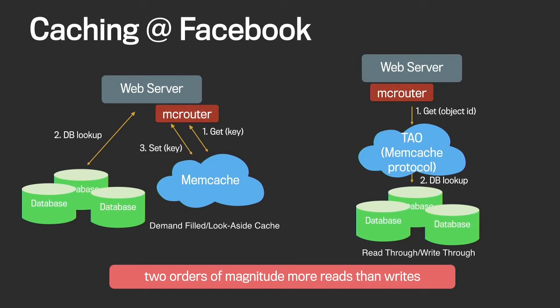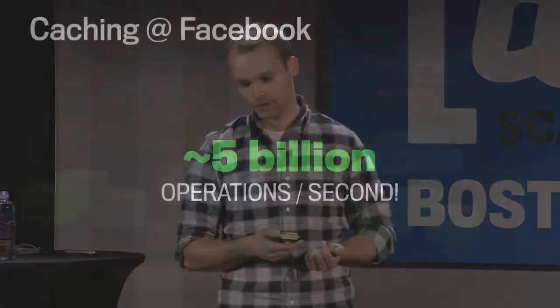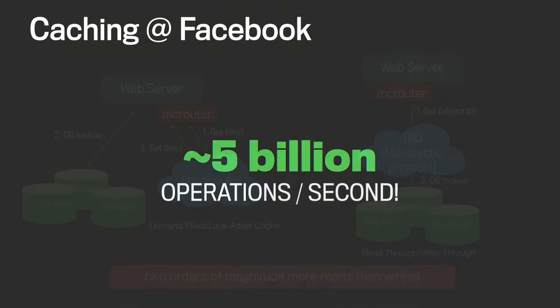We typically see two orders of magnitude more reads than writes, so most of the requests can actually be served from the cache. In terms of numbers, at Facebook we see almost 5 billion cache operations per second at peak.